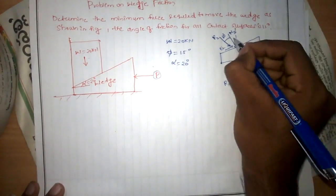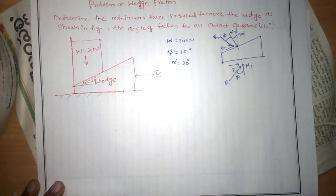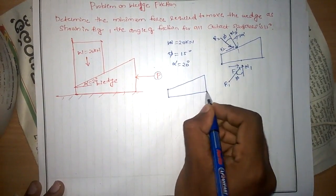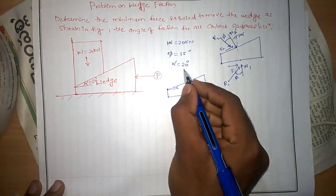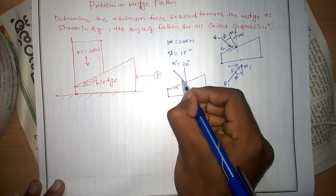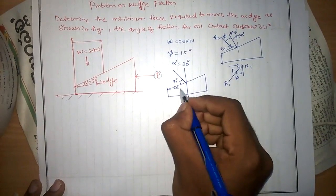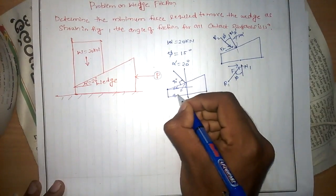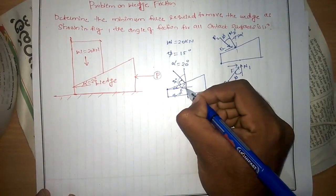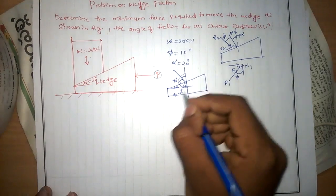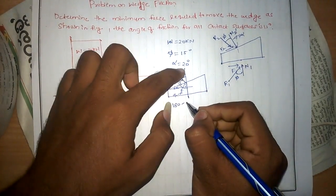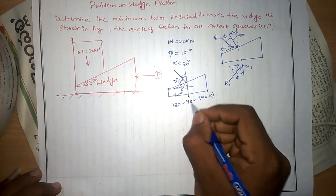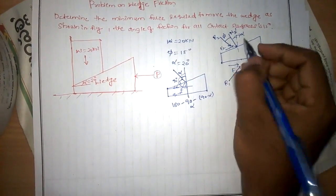Now, what is this angle? This angle will be alpha. Alpha is 20 degrees. Here is the explanation: the wedge makes an angle of alpha. The normal reaction is perpendicular to the surface, making a 90-degree angle. This means the adjacent angle is 90 minus alpha. Since the total angle on a straight line is 180 degrees, subtracting 90 and (90 minus alpha) gives: 180 − 90 − (90 − alpha) = alpha. So this angle is indeed alpha, equal to 20 degrees.